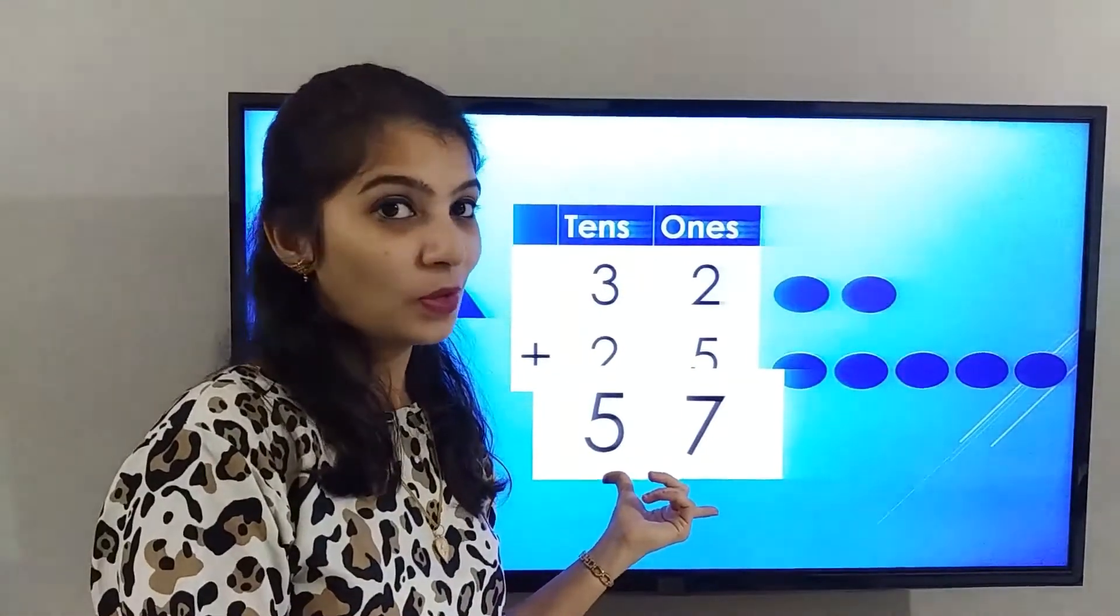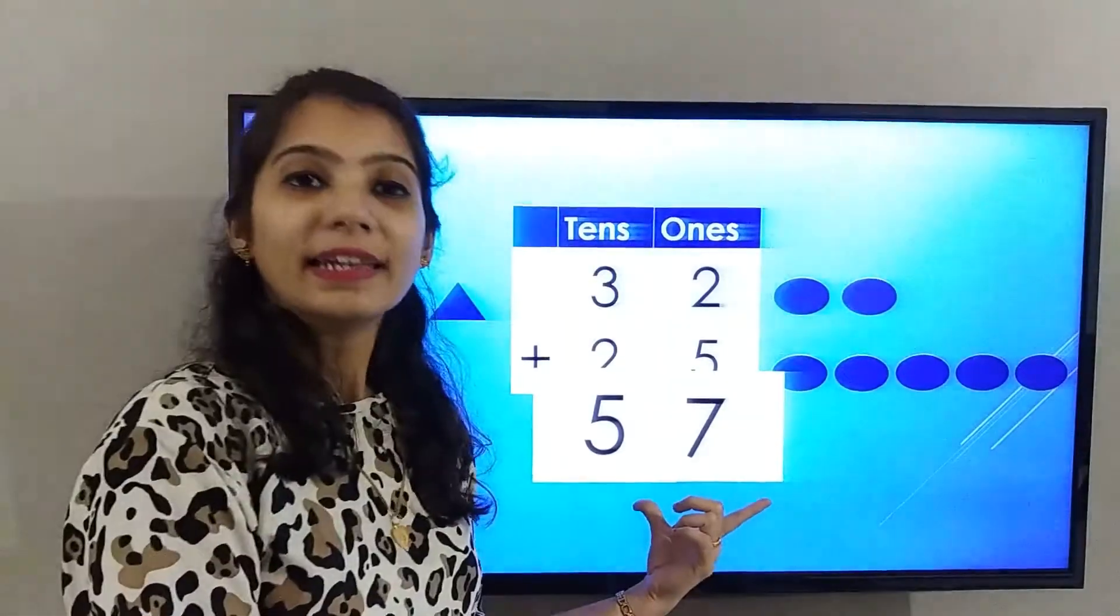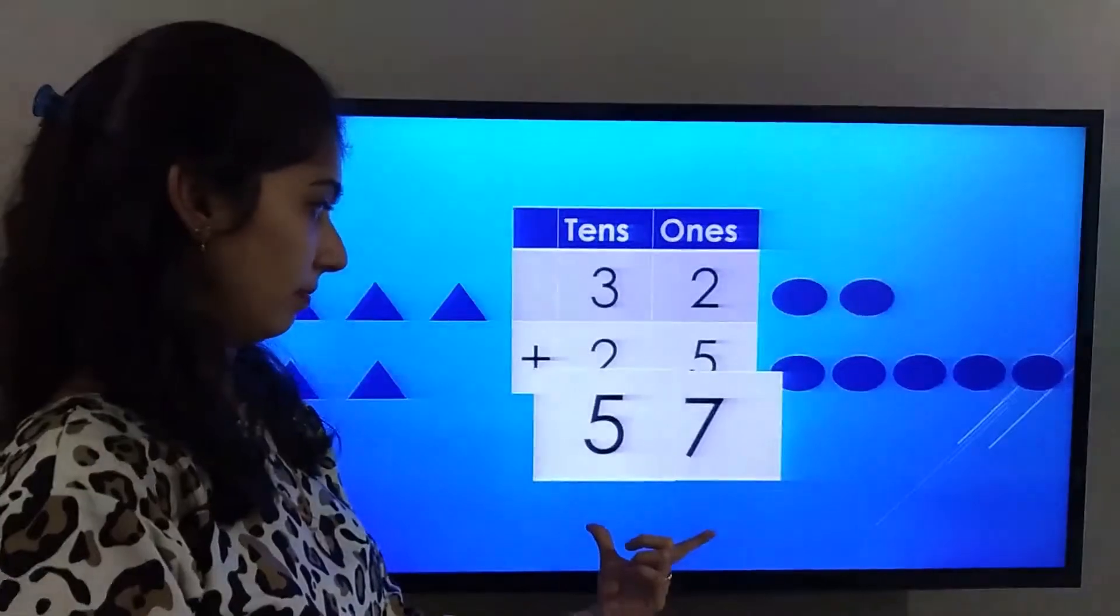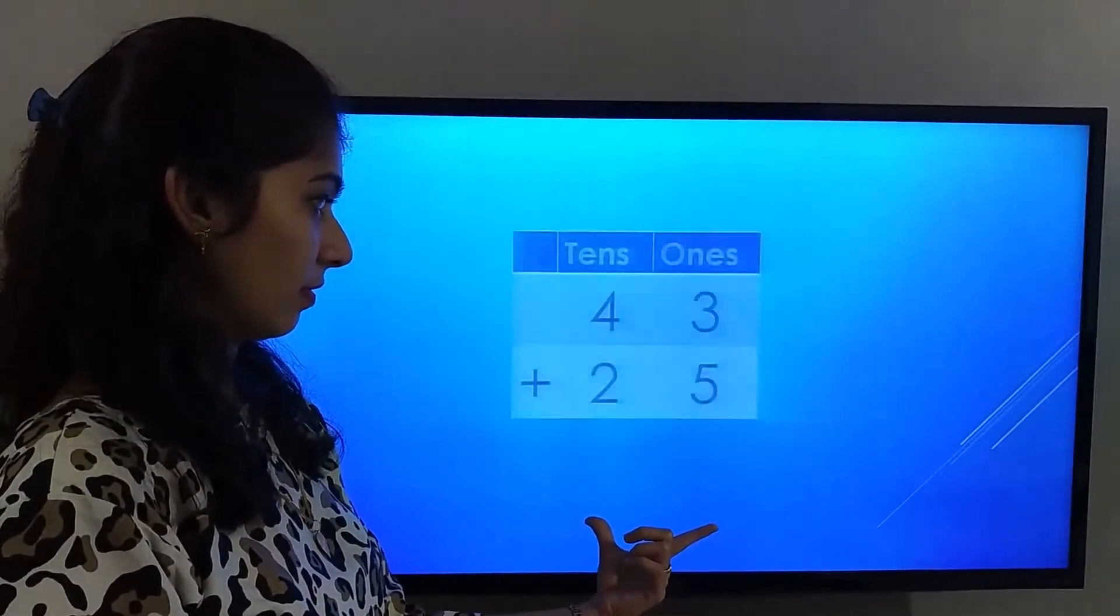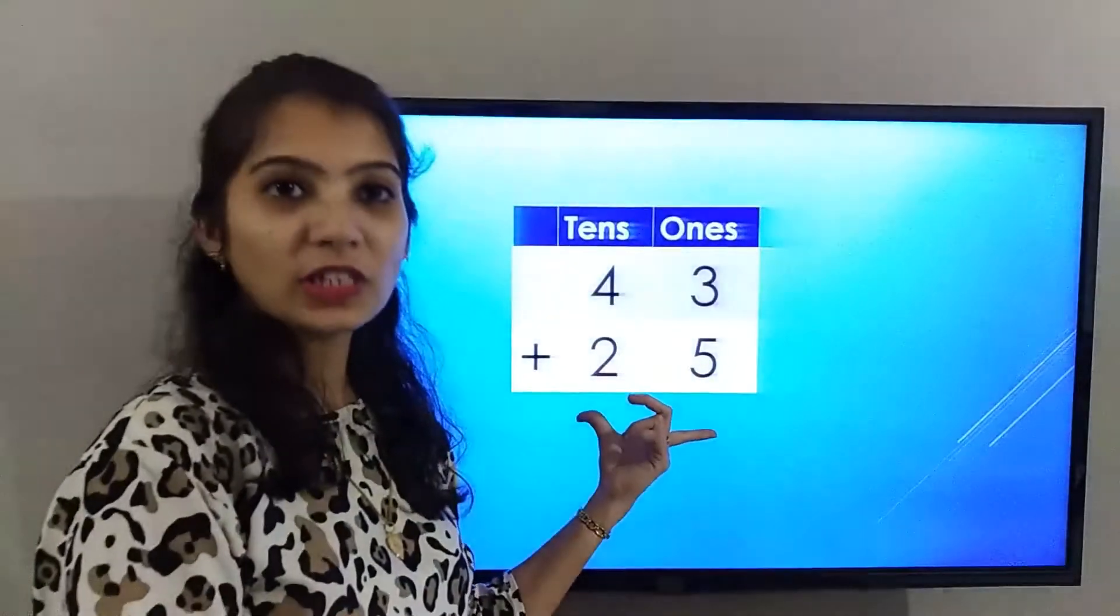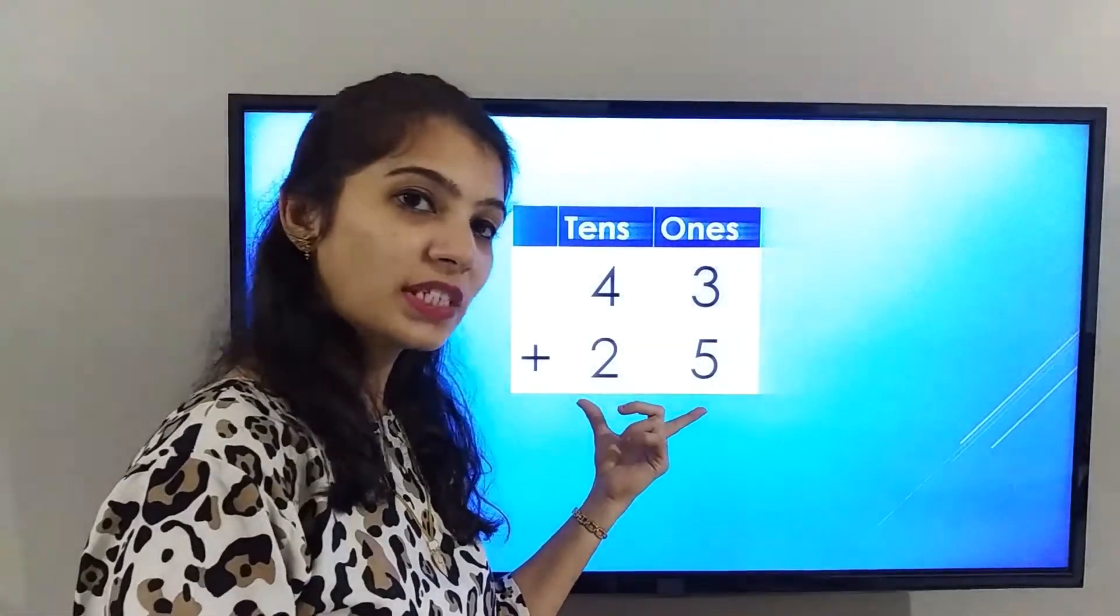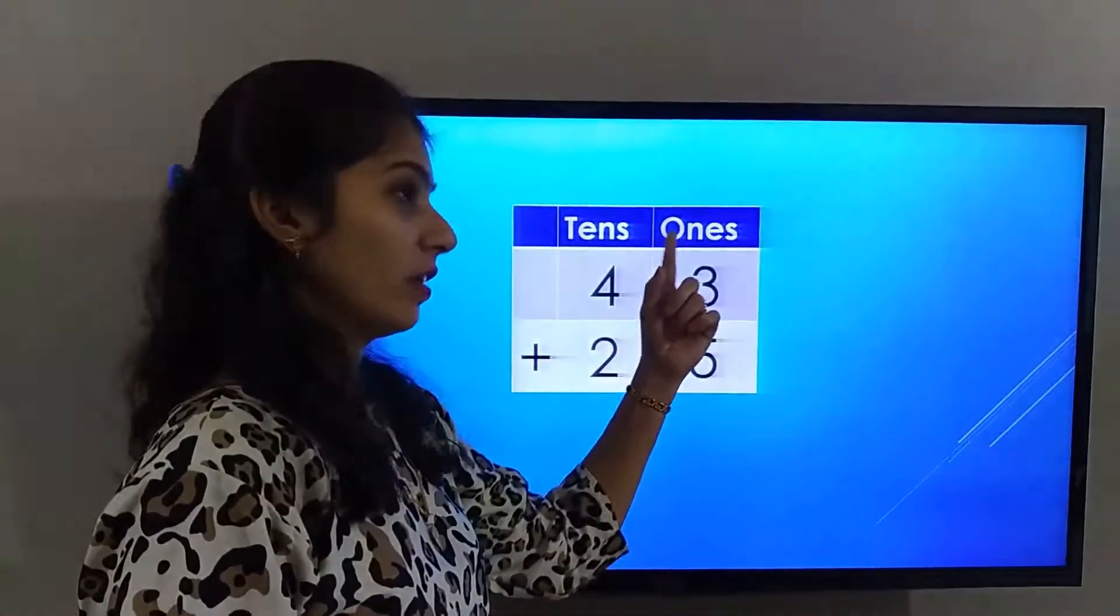57. Wasn't that easy? Let's solve the next one. The number on the screen is 43 plus 25. Again, we